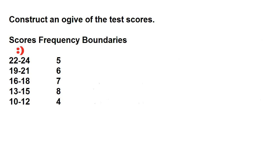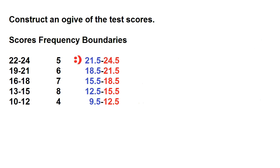For scores 22 to 24, the lower limit is 22 and the upper limit is 24. Subtract 0.5 from 22 and add 0.5 to 24 — the class boundaries are 21.5 to 24.5. The remaining class boundaries are: 18.5 to 21.5, 15.5 to 18.5, 12.5 to 15.5, and 9.5 to 12.5.